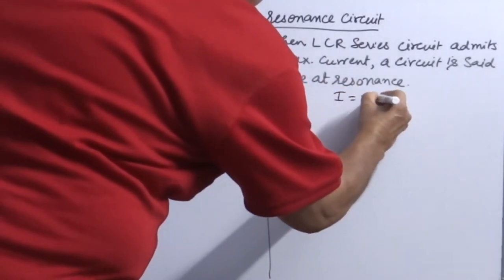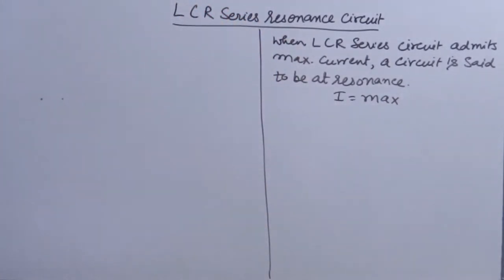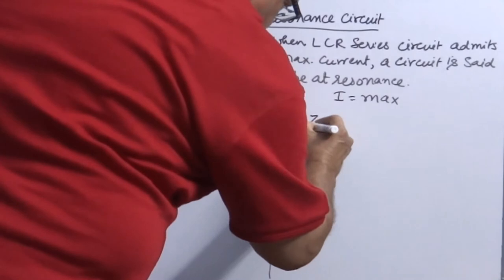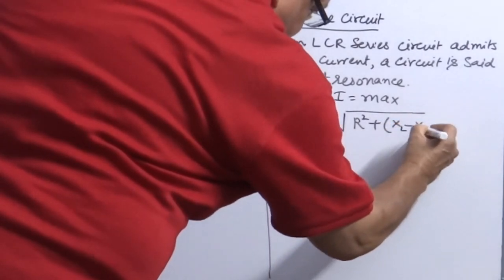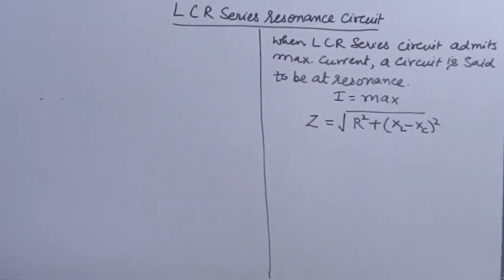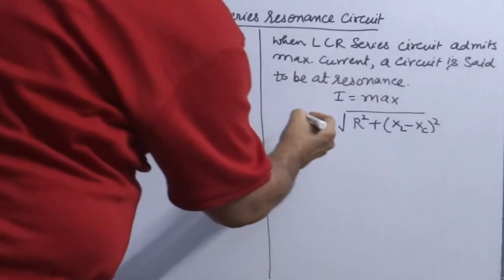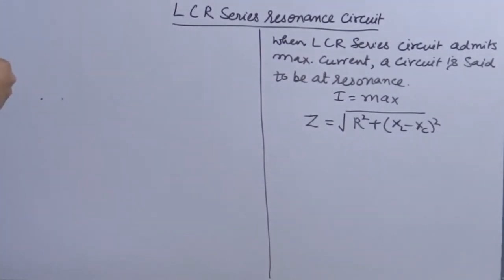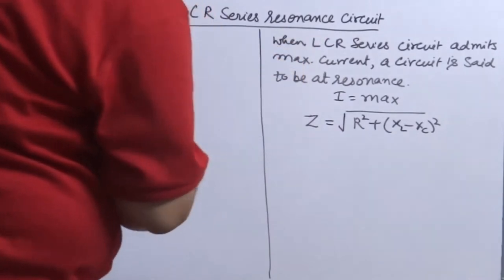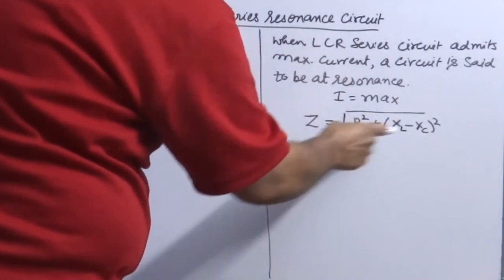Now for admitting current as maximum, for maximizing current, impedance of the circuit should be minimum. Now impedance of LCR circuit you know is equal to what? Z is equal to square root R square plus XL minus XC. So now the question arises how can I minimize the impedance of the circuit by using frequency of AC source? When we look at this issue, R is independent of the frequency, it has no dependence on the frequency. Only two factors XL and XC are depending on frequency.